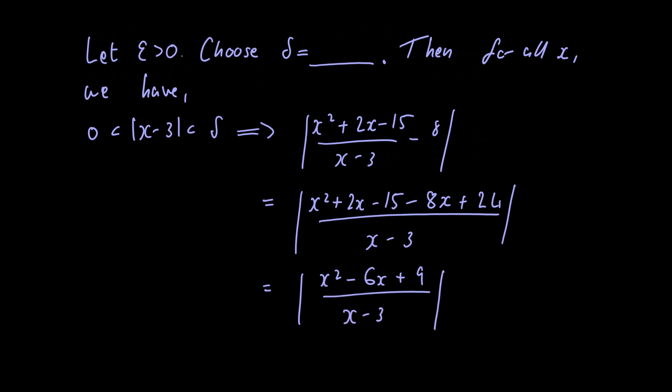Now notice that we can rewrite the numerator as x minus 3 multiplied by x minus 3 or x minus 3 squared. Doing so we have x minus 3 squared divided by x minus 3 and we can cancel a factor of x minus 3 so we're just left with x minus 3.